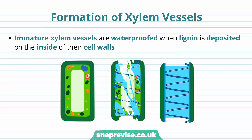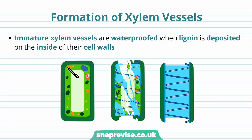Now let's talk about how xylem vessels are actually formed. The xylem vessels are formed by cells which end up dying and losing all of their cytoplasm and organelles. The first cells that start making the vessels are called immature xylem vessels because they haven't matured yet. As they die, they start to lose their cytoplasm and organelles, and then they get lined with lignin.